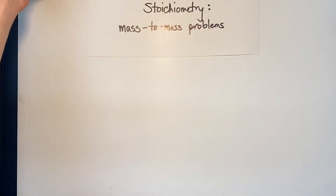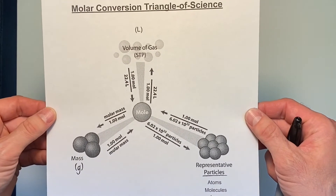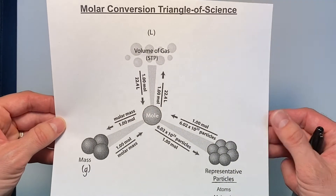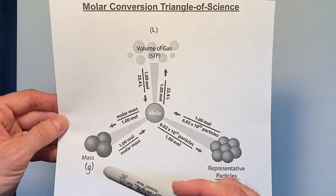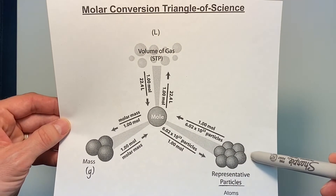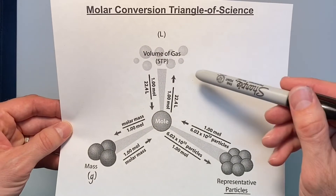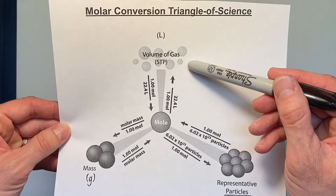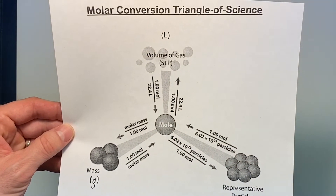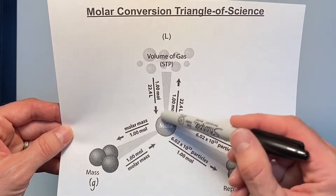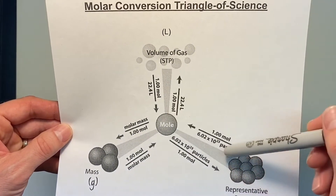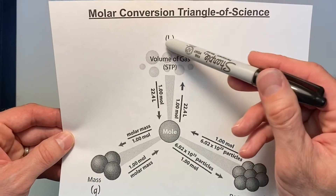Stoichiometry is the unit that uses our molar conversion triangle of science. We first used this in unit 9 when we studied the mole. In unit 9 we gave you an amount of a chemical — perhaps in grams, number of particles or atoms or molecules, or the volume in liters — and we asked you to convert that amount to a different unit of measurement for that same chemical.